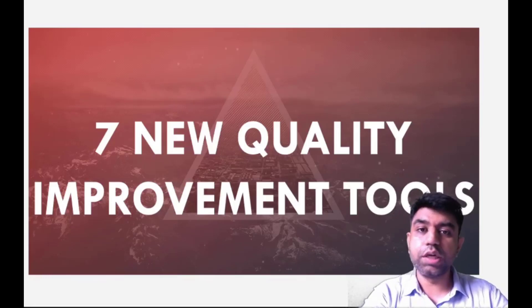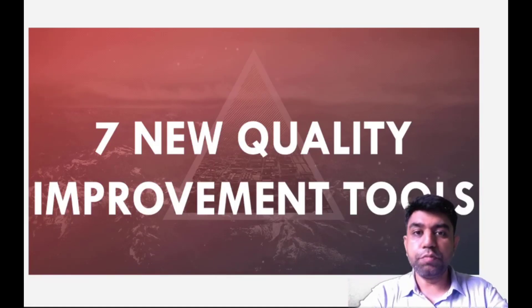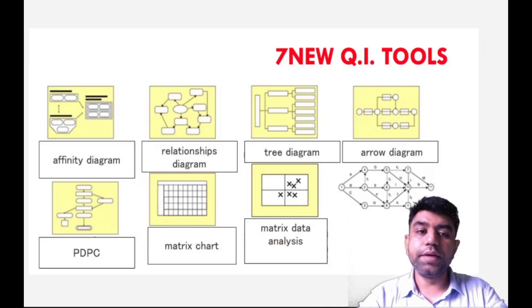That's all about the seven basic quality control tools. Now, we are going to discuss the new quality improvement tools. This is more famous because these quality improvement tools came into the picture later on. That's why it has been identified as seven new quality improvement tools. But more or less, the basic fundamental will remain the same: proper representation of the data. Seven new quality improvement tools include Affinity Diagram, Relationship Diagram, Tree Diagram, Arrow Diagram, PDPC, Matrix Chart, and Matrix Data Analysis.